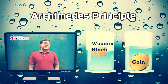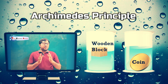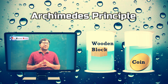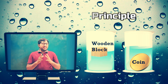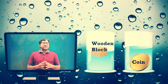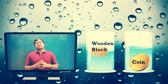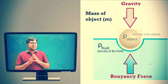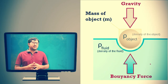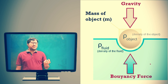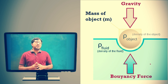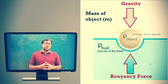Why do some objects float or sink when placed on the surface of water? It depends on buoyancy force. Buoyancy force means whenever any object is submerged in liquid, partially or fully, the liquid exerts an upward force on it. This upward force is called buoyancy force.